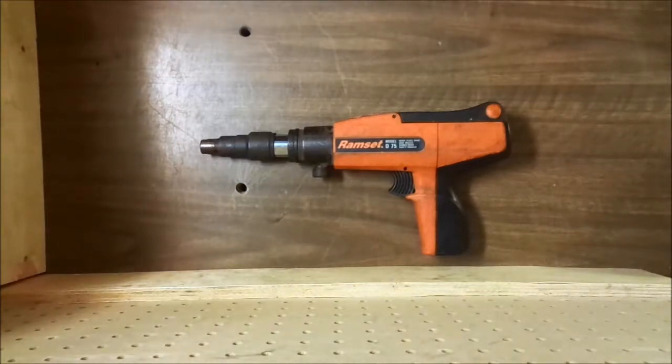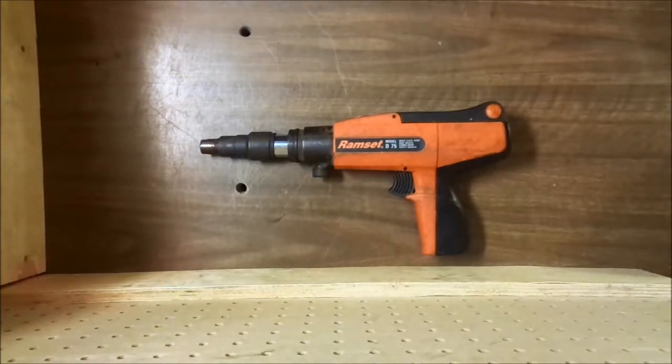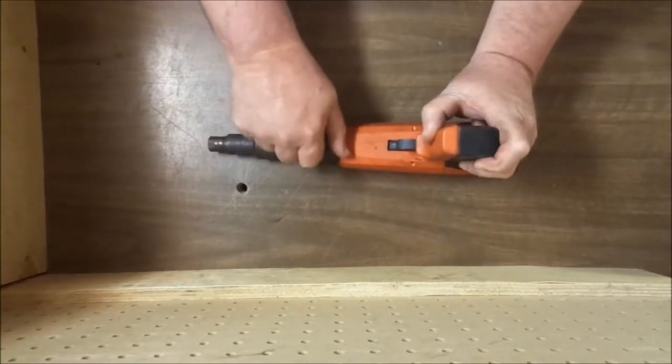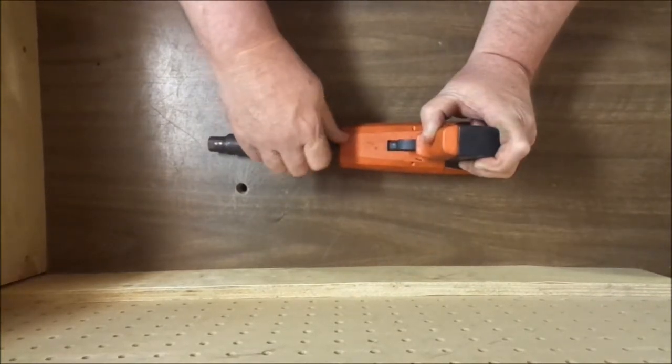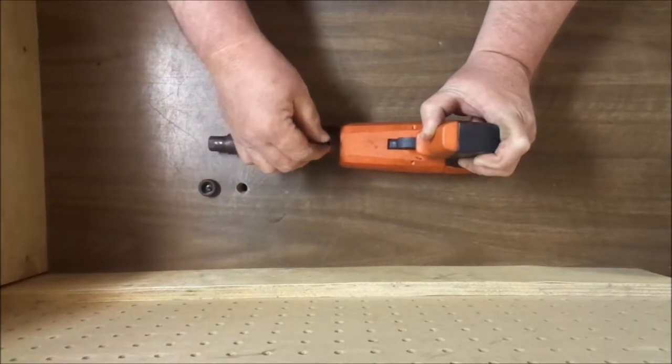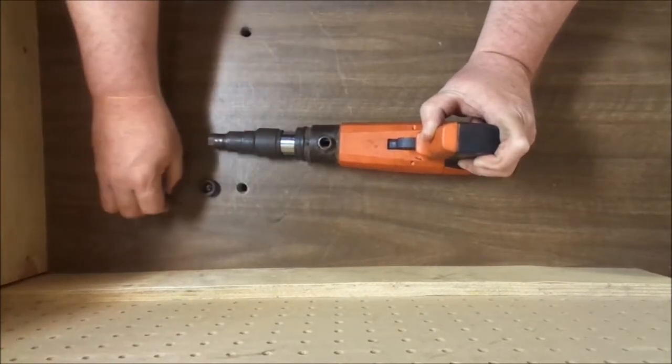Ramset wanted a tool that would use a full 3-inch pin, designed for a full 3-inch pin, and that's where the D75 comes from. It was made more like the Ramset tools of the time, like the single shot tool, the 4170.